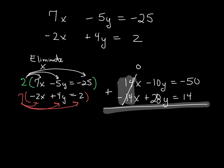Now for the y's, it's 28 positive and a negative 10y. So that leaves us with 18y equals negative 36. I divide both sides by 18, and I'm left with y equals negative 2.